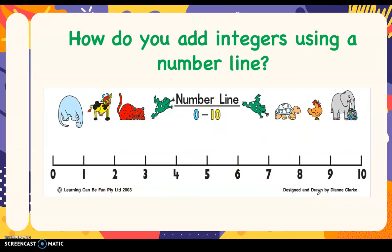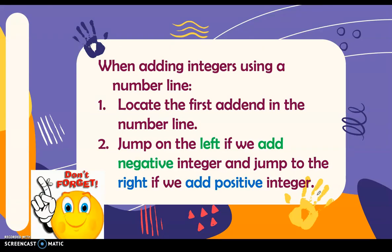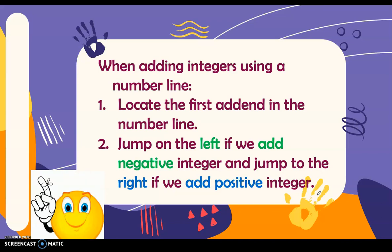How do you add integers using a number line? When adding integers using a number line, locate the first addend on the number line. Then jump to the left if we add a negative integer, and jump to the right if we add a positive integer.